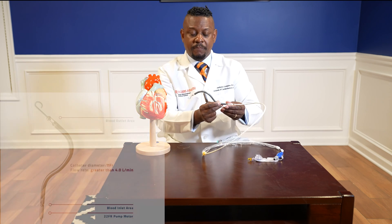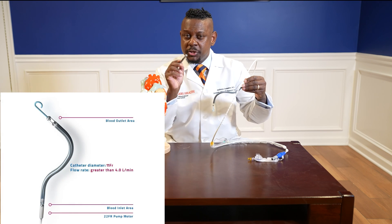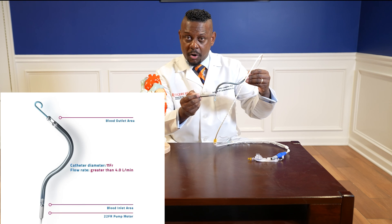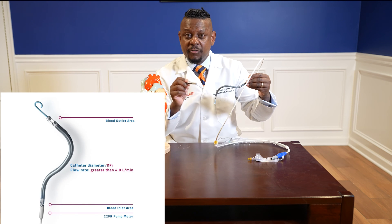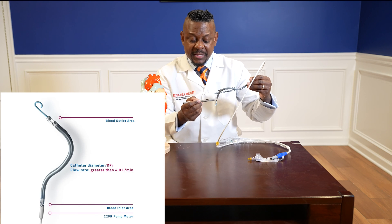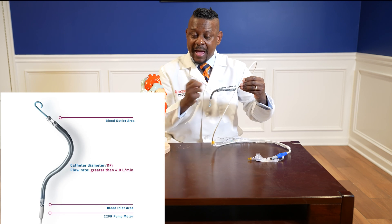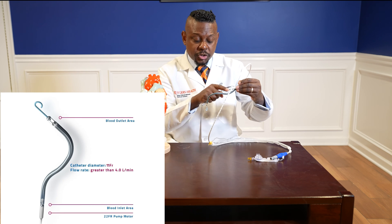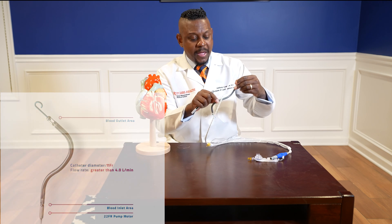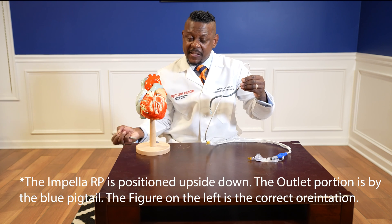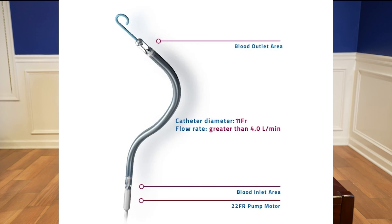This is an Impella RP right here. There are two critical aspects I want to highlight: the input area of the RP is placed in the inferior vena cava, which provides blood to the right atrium. This input area pulls blood out of the lower portion of the body and pushes it out to the output area, which is positioned in the pulmonary artery — effectively bypassing the right ventricle and allowing it to recover and rest.